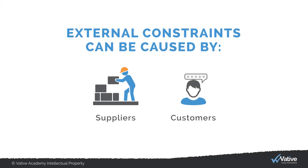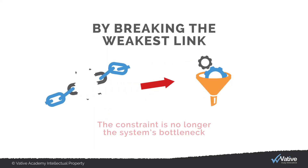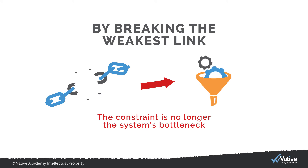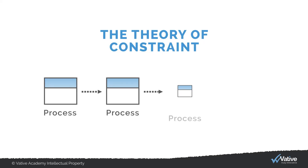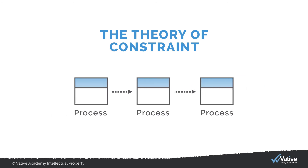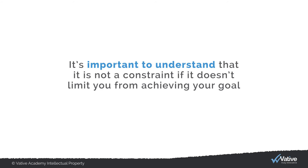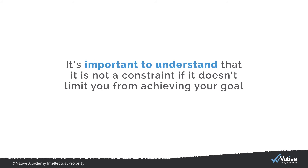External constraints can be caused by suppliers through material shortages or poor quality, or by customers such as a lack of demand or input. By breaking the weakest link, the constraint is improved to a point where it is no longer the system's bottleneck — the limiting factor is now some other part of the system. The theory of constraint focuses on the ongoing elimination of constraints rather than resolving issues randomly. It is important to understand that it is not a constraint if it doesn't limit you from achieving your goal.